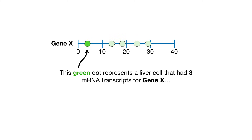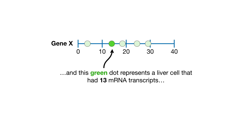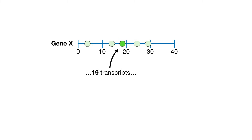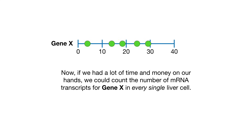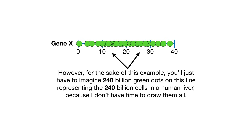This green dot represents a liver cell that had three mRNA transcripts for gene X. And this green dot represents a liver cell that had 13 mRNA transcripts. Now, if we had a lot of time and money on our hands, we could count the number of mRNA transcripts for gene X in every single liver cell. However, for the sake of this example, you'll just have to imagine 240 billion green dots on this line, representing the 240 billion cells in a human liver, because I don't have time to draw them all.